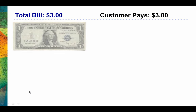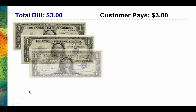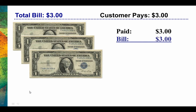Assume that a customer's total bill is $3, and let's further assume that the customer has three $1 bills in their pocket, so the customer pays with those $3. In this case, it's easy to see that the bill is equal to what they paid, so we owe that customer no change at all.